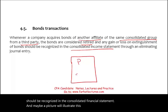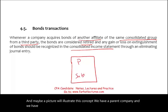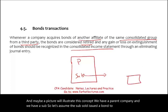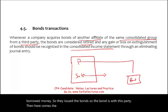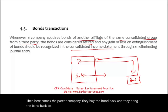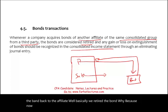We have a parent company and a subsidiary. Assume the sub issued a bond to someone and borrowed money — so the bond is with a third party. Then the parent company buys the bond back and brings it back to the affiliate. Basically, we retired the bond, because now the consolidated group has paid off the bond.